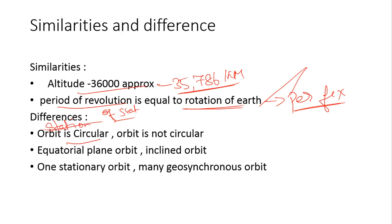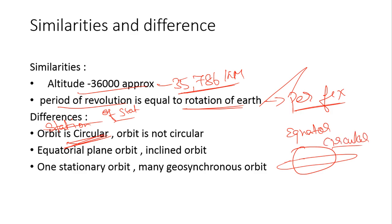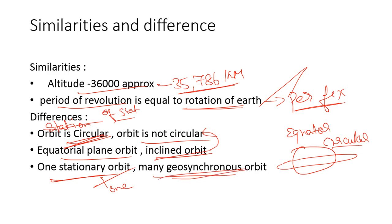Geostationary orbits are equatorial orbits, and it is for this reason they are circular, while geosynchronous orbits are inclined orbits and are not circular. There is only one geostationary orbit because there is only one equator, while there are many inclined orbits — so there are many geosynchronous orbits. I hope you got the similarities and the difference and have clarity with respect to geostationary and geosynchronous orbit.